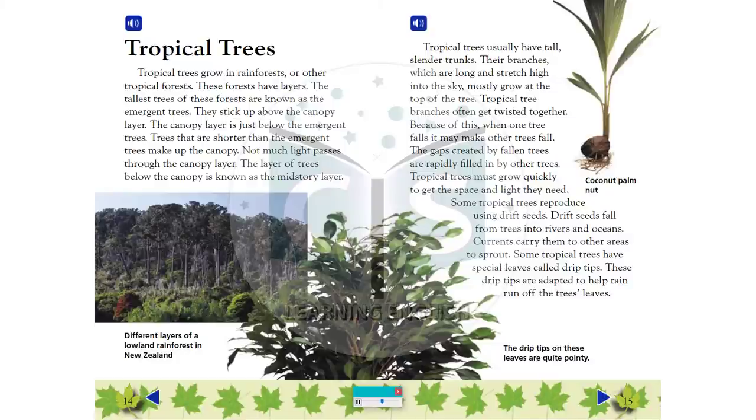Tropical trees must grow quickly to get the space and light they need. Some tropical trees reproduce using drift seeds. Drift seeds fall from trees into rivers and oceans. Currents carry them to other areas to sprout. Some tropical trees have special leaves called drip tips. These drip tips are adapted to help rain run off the tree's leaves.